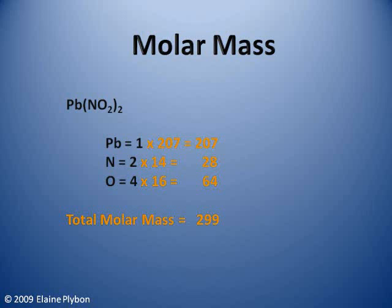For Mrs. Plybon's class, please round to the nearest whole number. Take the mass of each element times how many of each element are in the compound. Then add them all together for the total molar mass. This compound has a molar mass of 299 grams.